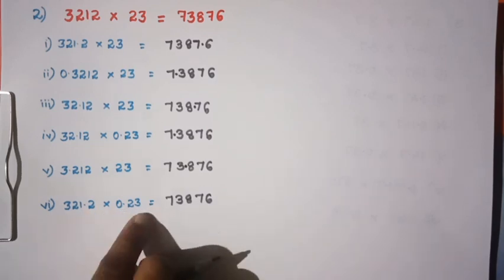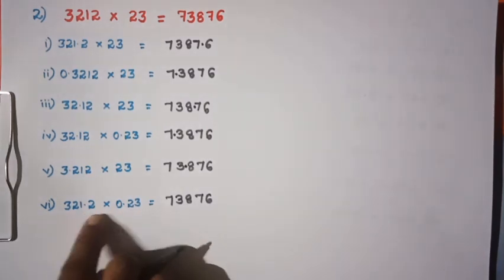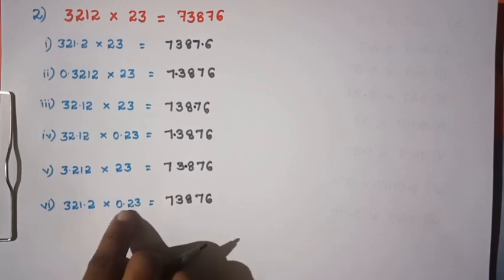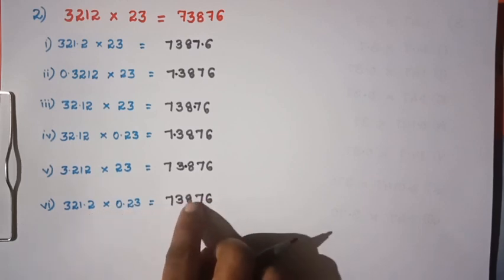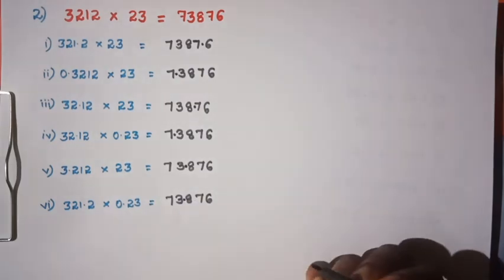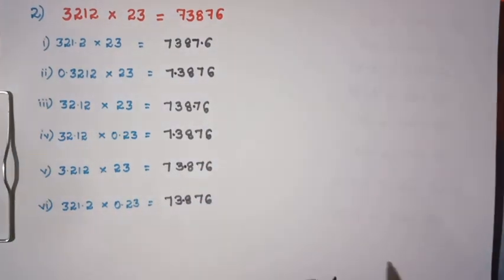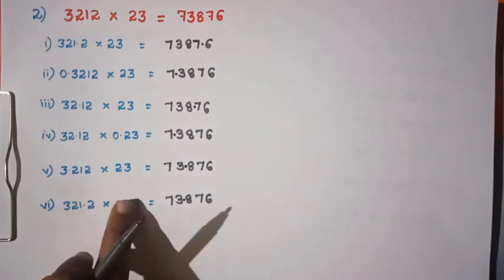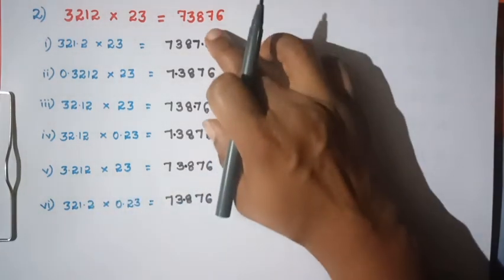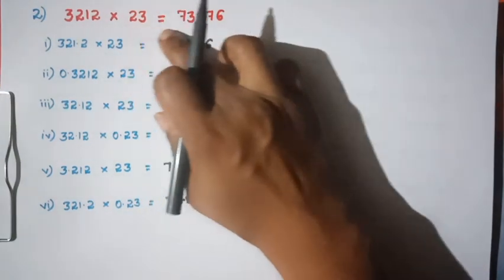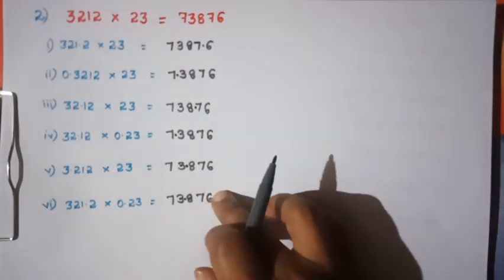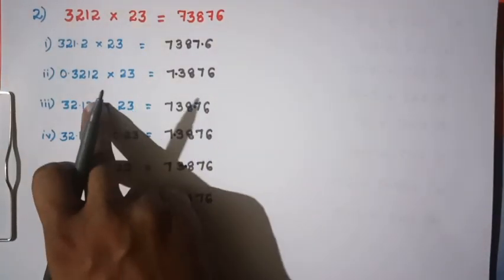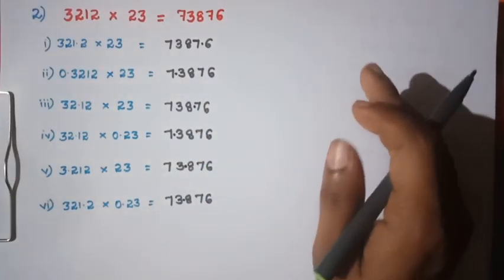So you multiply the numbers, then place the decimal on the left by counting total decimal places from both numbers. You add the decimal places from both factors to find where to put the decimal in the product answer. Is that clear?